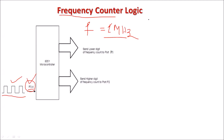You can use Timer 1 also as a counter, but in this example I am going to use Timer 0 as a counter. Since we are using it as a counter, it should work on the external frequency. So that external frequency should be connected to pin P3.4.